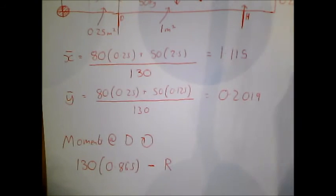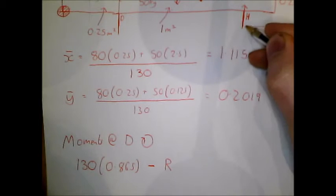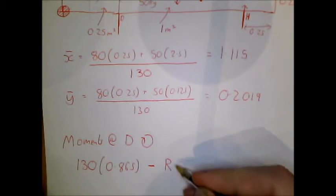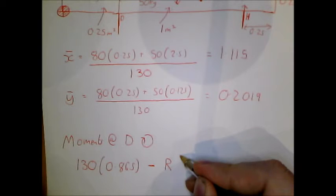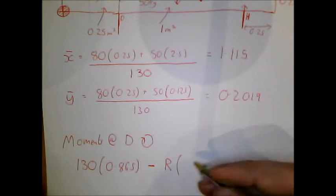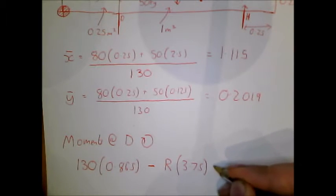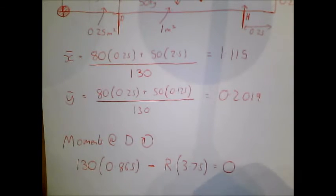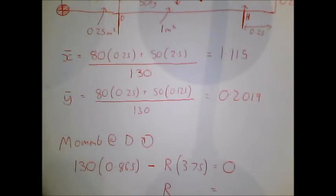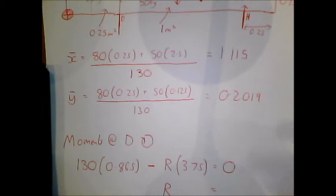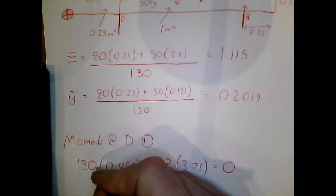And we need to know how far away that is from here. So the whole thing is 4 metres. This distance is 0.25. So that must be 3.75 equals 0. So 130 lots of 0.865 divided by 3.75. Oops, I forgot my G value. Beg your pardon.